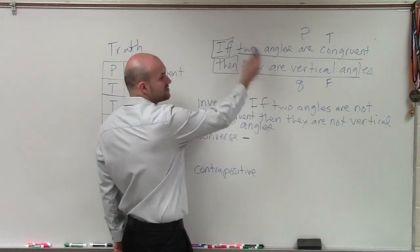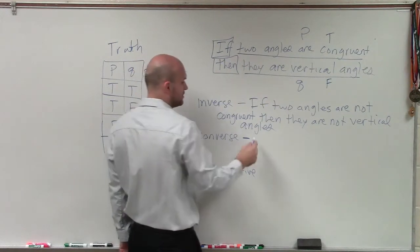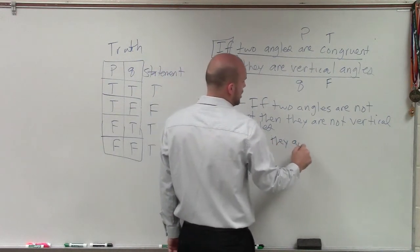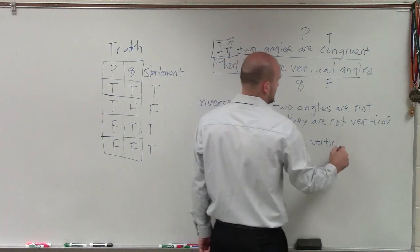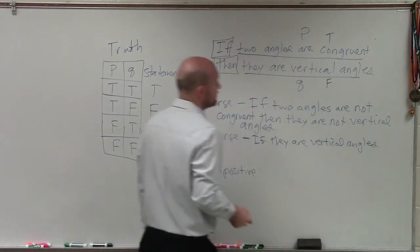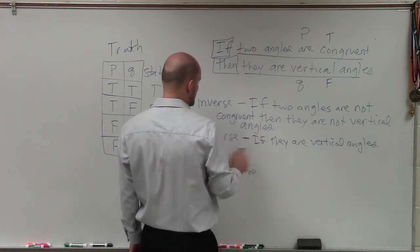The converse is just when you swap the p and the q. When you're dealing with inverse, Romello, what you're doing is... So what do you do if they are vertical angles? If they are vertical angles, then they are congruent.